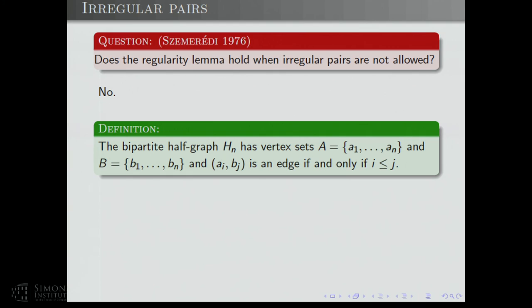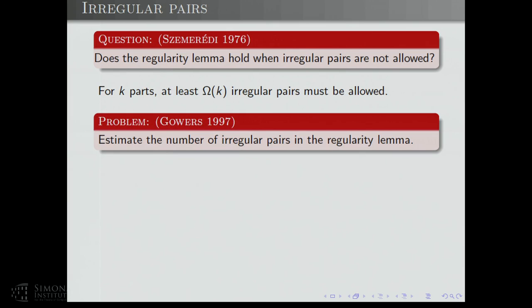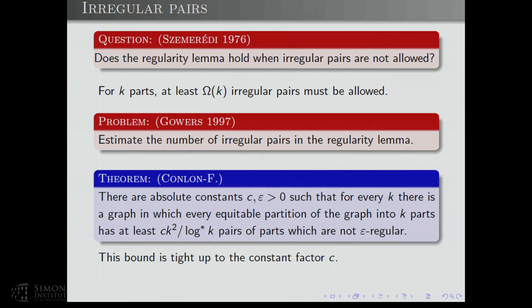Unfortunately, the answer is no, and a counterexample is the half graph. This is a bipartite graph with two sets A and B each of size N, where (A_i, B_j) is an edge if and only if i ≤ j. If you take an equitable partition of the half graph into K parts, you're going to get at least a linear-in-K number of irregular pairs. Out of the order K² total pairs, you get at least linearly many that are irregular. Gowers asked to estimate the number of irregular pairs in the regularity lemma.